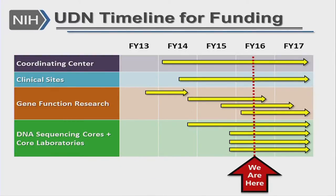This gives you an idea of where we are with our funding. We have now awarded all of the major sites that are going to be part of the Undiagnosed Diseases Network. We do have one last batch of R21s yet to be awarded this summer, and it's likely there will be a couple more supplements for gene function studies and other network needs, but there will be no additional sites awarded during this first phase.